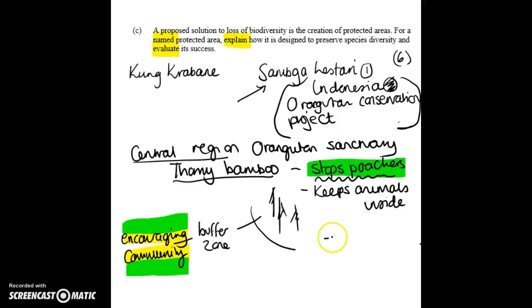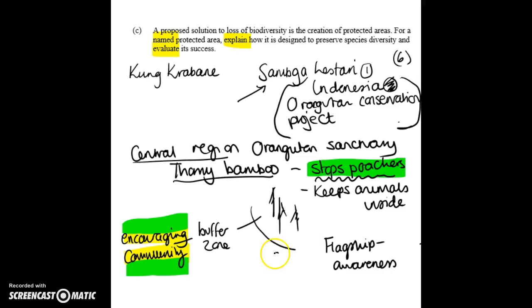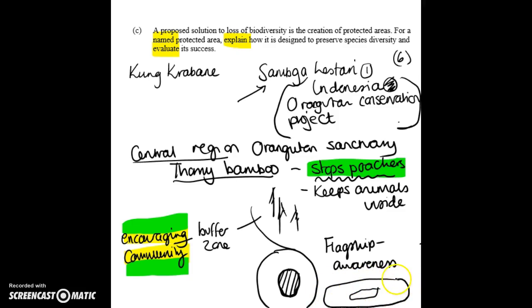Another feature is the flagship species — the orangutan — which generates lots of awareness raising. It's quite a famous place because Willie Schmitz gave the TED talk about it. We've also got the shape of the reserve: it's round, which maximizes the area-to-edge ratio. This gives a large central region with less edge, as opposed to a long thin area which would create more edge effects and less protected center.